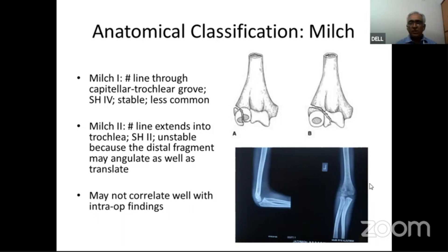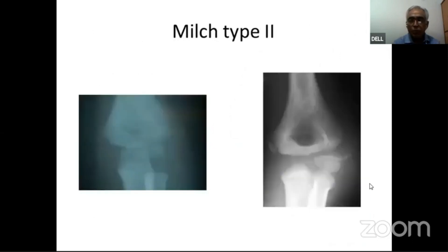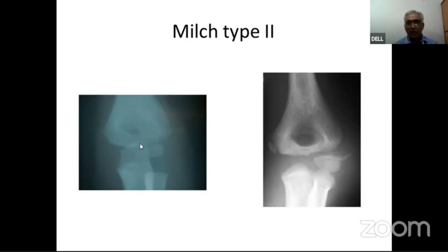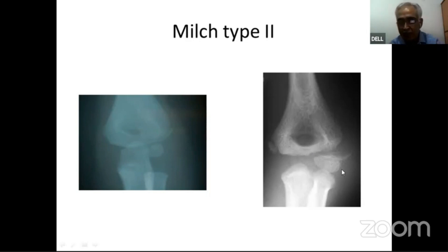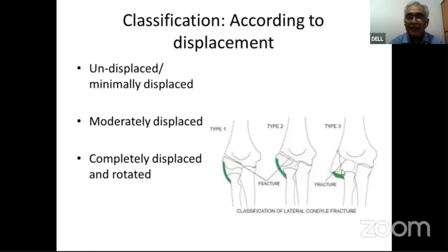Milch Type 2 fracture is more common, where the fracture line crosses medial to the capitellum. Because it involves part of the trochlea, this fracture is inherently unstable. You can see the same fracture appearing stable initially but then falling off, demonstrating the inherent instability. However, it is very difficult on X-ray to classify into Milch Type 1 or Type 2, which is why other classifications were developed.